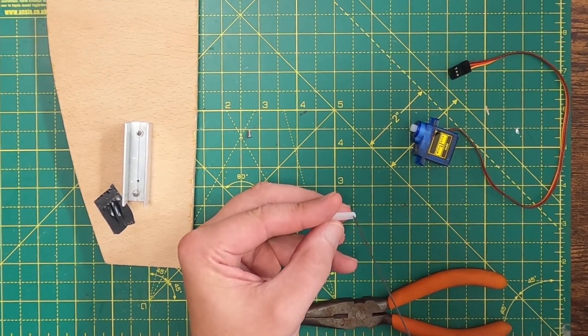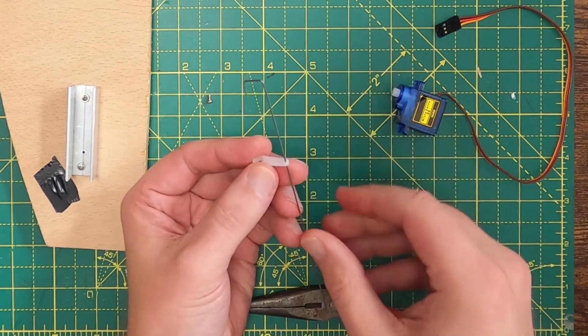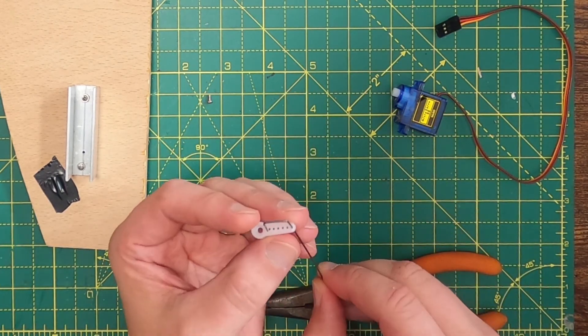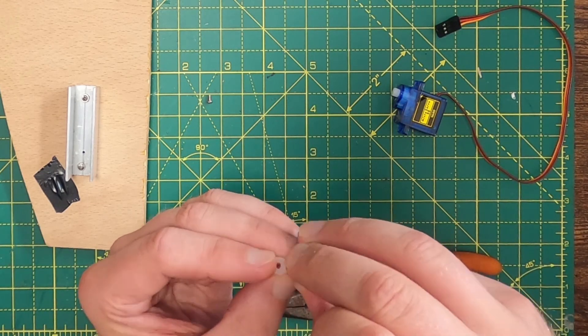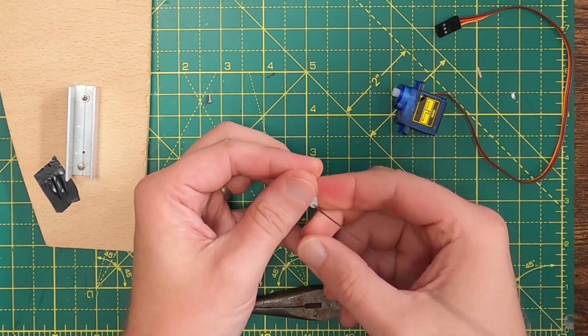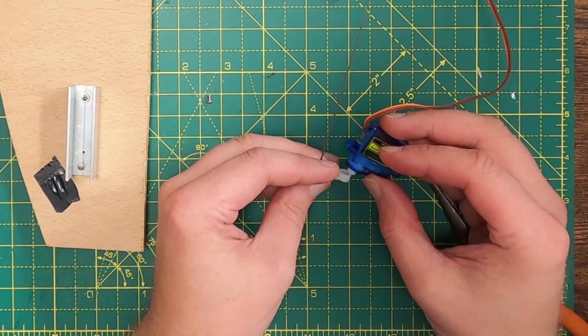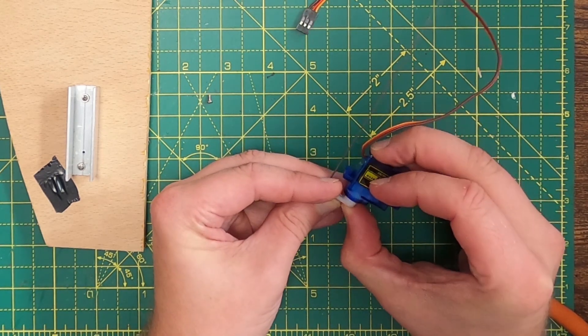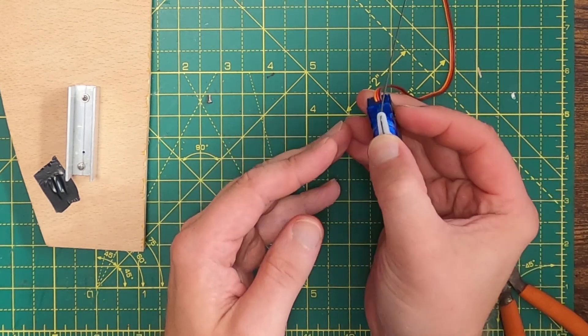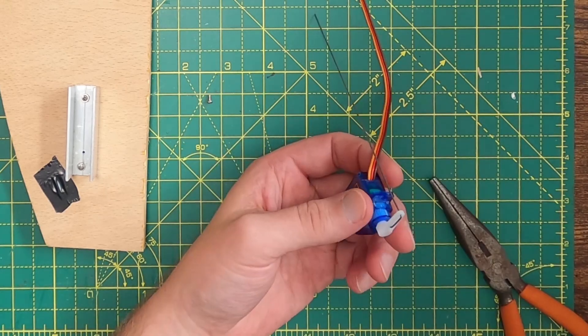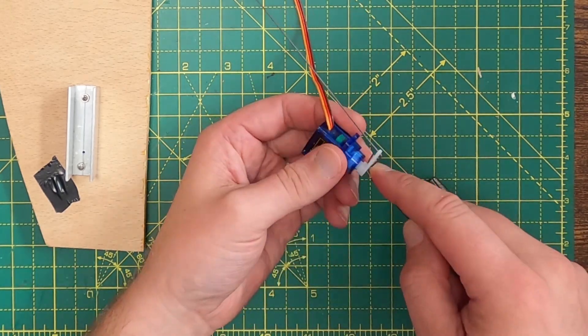Now I'm going to fix the wire to the servo horn. I've already bent this U shape into the wire so that it will fit onto the horn like this and then we can just bend down the end of the wire to stop it from coming out. Time to attach the horn to the servo. I've already centered this servo so I just need to place the horn so that it's pointing straight ahead and screw that in place.